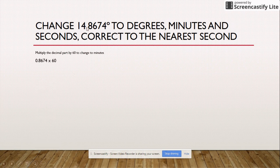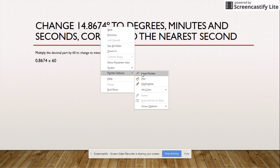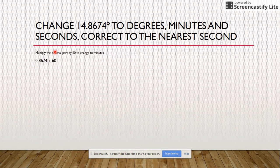So the decimal part is 0.8674. Let me get my pointer back. There we go. So we go 0.8674, we just do the decimal part times by 60.